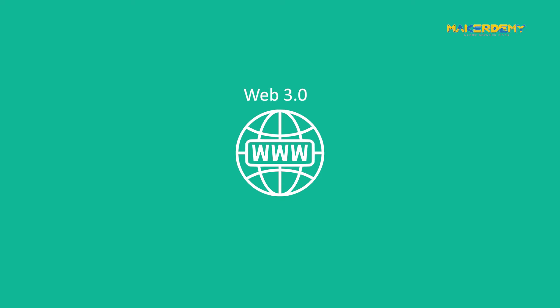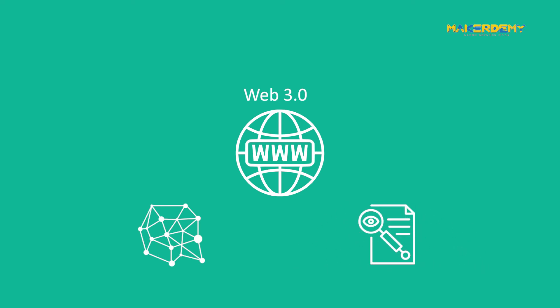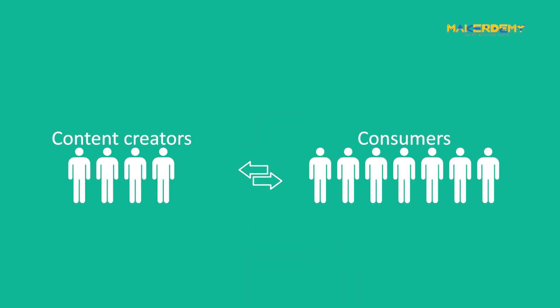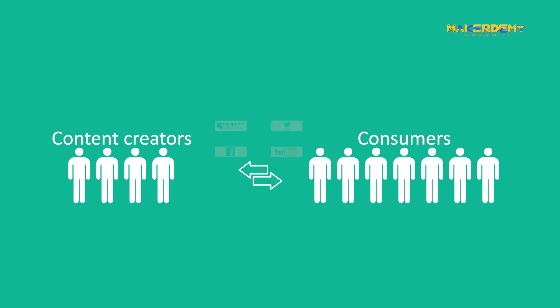Web 3.0 differs from its predecessors in the fact that decentralization and transparency lie at its core. In Web 2.0, data is centralized at the companies that offer services. When you upload a video to YouTube, though the video may be listed under your name, YouTube is the one who has a final say over it. Any such organization has control over data shared through its services.